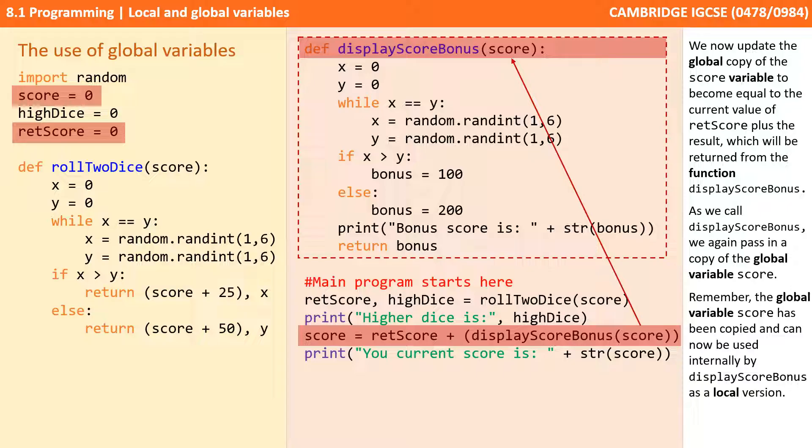As we call displayScoreBonus, we again pass in a copy of the global variable score. Remember, the global variable score has been copied and can now be used internally by displayScoreBonus as a local version.